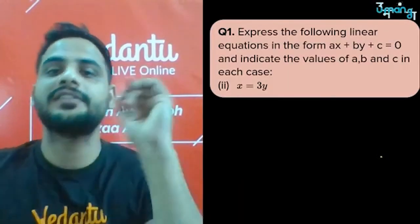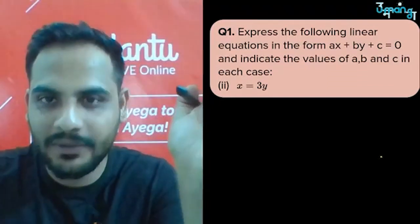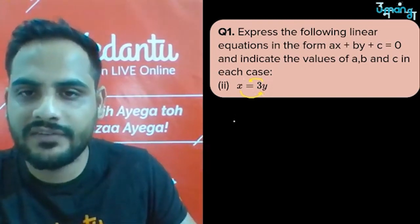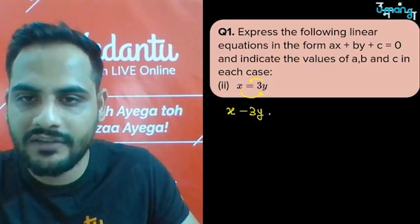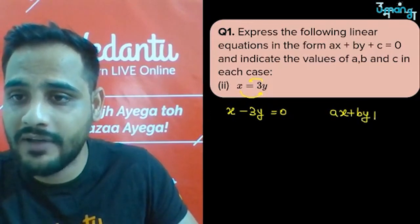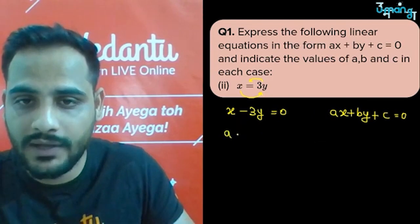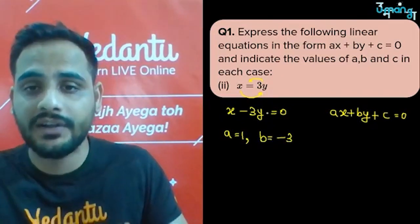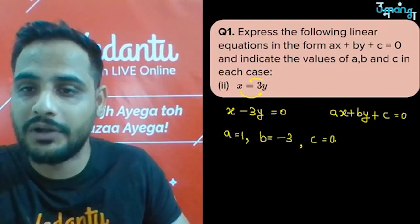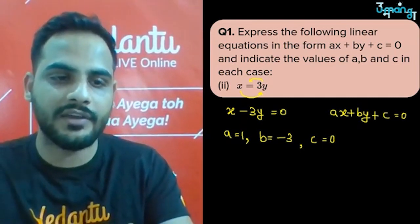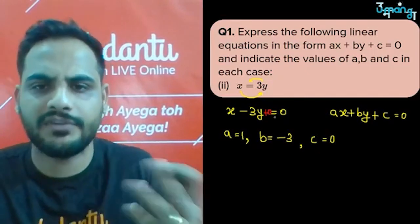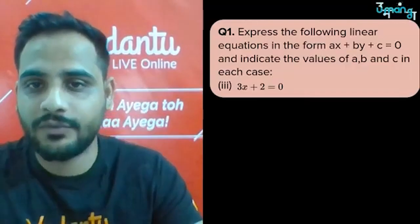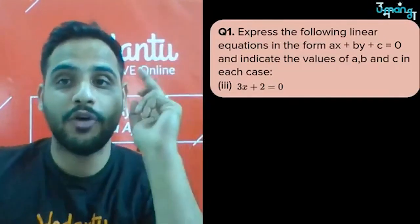For x = 3y, it is not in general form. Shifting 3y gives x − 3y = 0. Comparing: a = 1, b = −3. The constant term is not present, so c = 0, because writing + 0 does not change the equation.